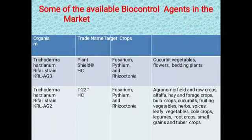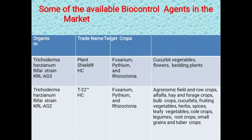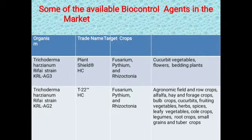Some biocontrol agents available in the market include Trichoderma harzianum with different strains such as AG3 or AG2. It controls different diseases on different crops — Fusarium, Pythium, Rhizoctonia — on cucurbits, vegetables, flowers, and mostly agronomic or horticultural crops.